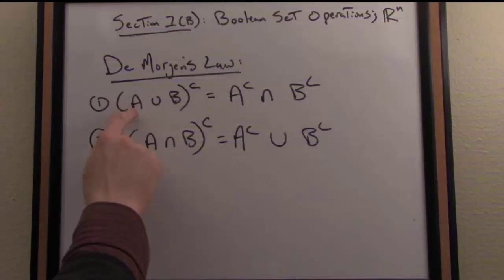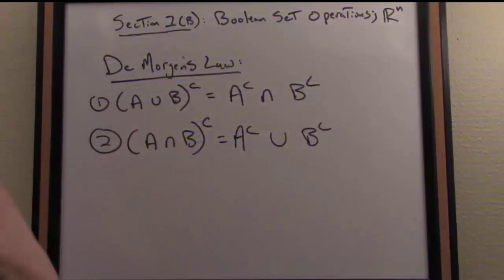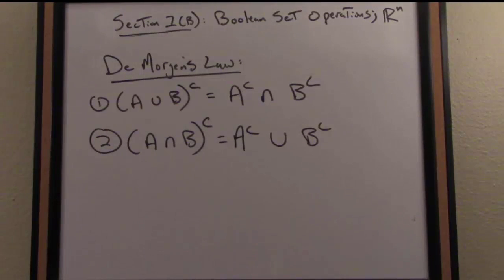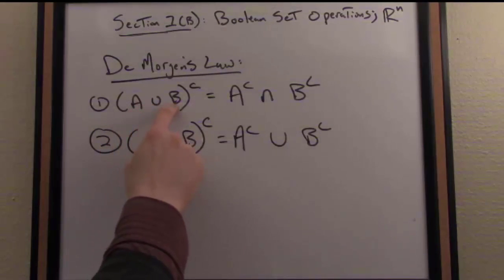So it's raining, remember union can be read as the connective or, so it's raining or I'm going to work. What's the complement or the negation of it's raining or I'm going to work?